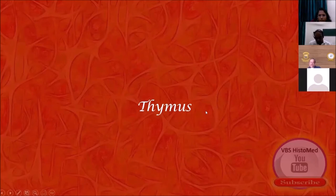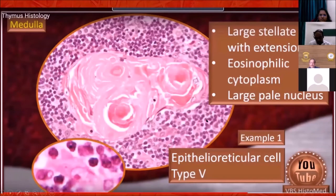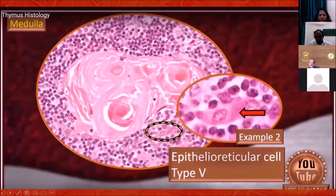Thymus — again cautioning and redirecting students' attention to another very interesting slide. In most of my lectures I present Hassall's corpuscles as some kind of cyclonic storm, but beyond Hassall's corpuscles, there are very specific cells that can be identified around them. Here I have highlighted in a bigger circle one type of epithelioreticular cell, and there is yet another epithelioreticular cell also visible.